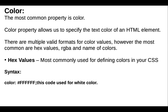First we discuss about color. The most common property is color. The color property allows us to specify the text color of an HTML element. There are multiple valid formats for color values, however the most common are hex values, RGBA, and name of colors. Hex values are most commonly used for defining colors in CSS. For example, the code hash followed by five 'f's is used for white color, and hash followed by five '0's is used for black color.